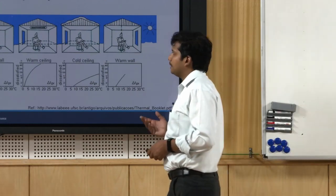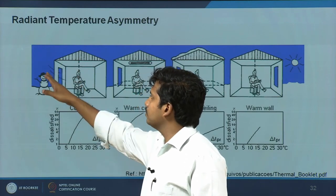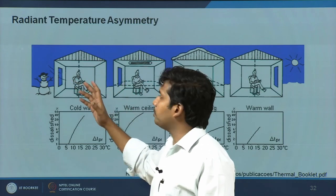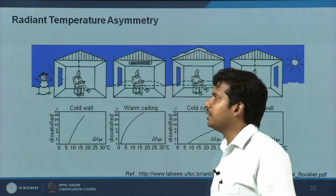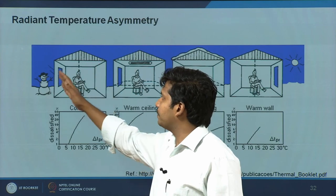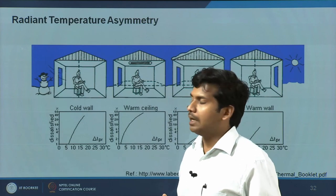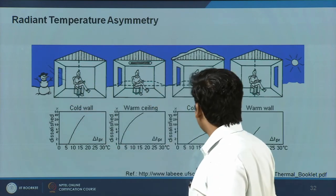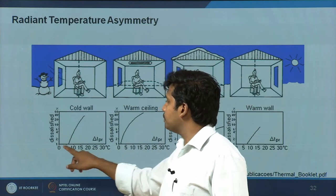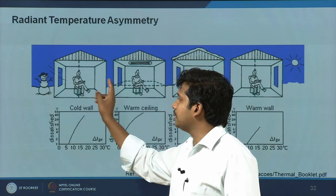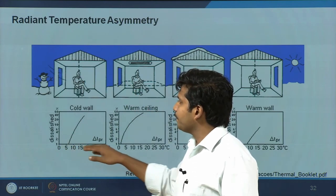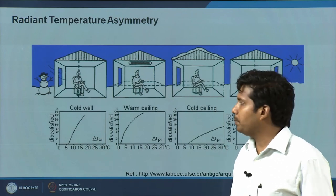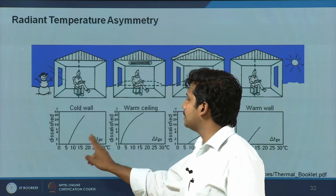Looking more closely at radiant asymmetry: on a cold day, sitting next to a window where surface temperatures may be as low as 4–5 degrees, while the indoor environment is heated with surface temperatures around 20–21 degrees, gives a temperature difference of 15–18 degrees. ISO 7730 provides a graphic indicator of the temperature difference between surfaces and the corresponding increase in the percentage of people dissatisfied. Dissatisfaction rises as this temperature difference increases.